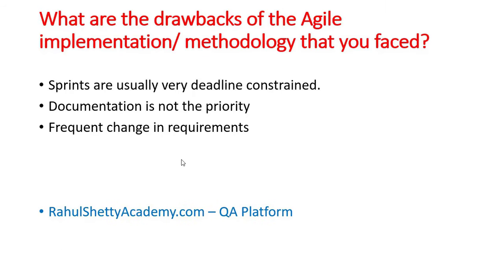Question 7: What are the drawbacks of agile methodology that you have faced? Sprints are usually very deadline-constrained — each sprint lasts two or three weeks, so you are forced to complete testing in that specific duration, which means you won't have much exposure to think and test from different aspects. Documentation is not a priority as requirements come on the fly — no one documents the way you do in a waterfall model. And there are frequent changes in requirements — you never know if what you're testing today will continue tomorrow. In agile, requirements are dynamic and you might get a completely new requirement the next day.